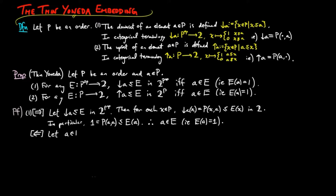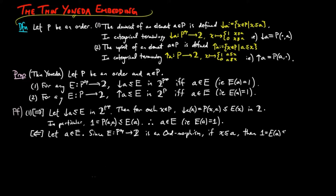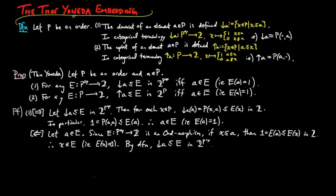In the reverse direction, let a be an element of e. Since e from p^op to 2 is an order morphism, if x is less than or equal to a, then 1 equals e on a is less than or equal to e on x in 2. Therefore, x is in e.